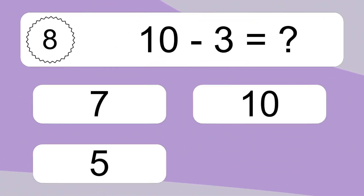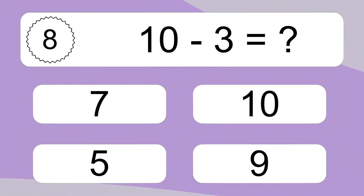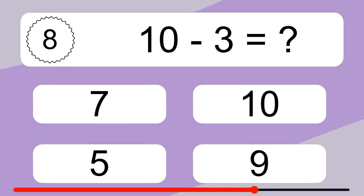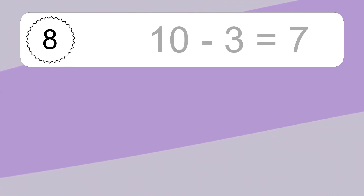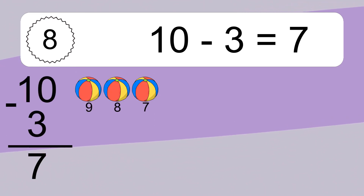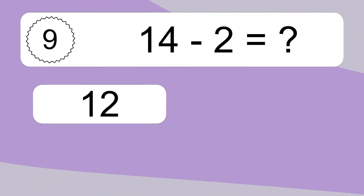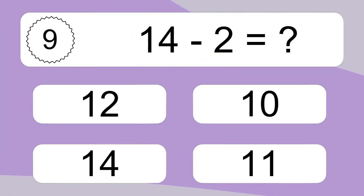10 minus 3 equals what? 10 minus 3 equals 7. Let's count it: 9, 8, 7.